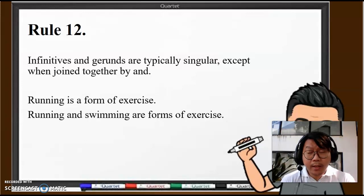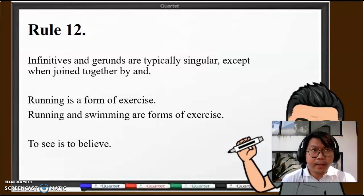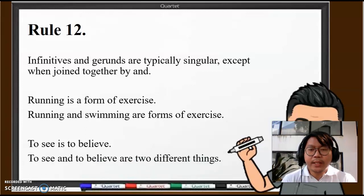And when you combine gerunds, they become plural. So "Running and swimming are forms of exercise." An infinitive is the basic form of the verb with the word "to." So "To see is to believe." "To see and believe are two different things." Remember, infinitive: "to" plus the basic form of the verb. Gerunds: -ing. They function as nouns, they function as subjects.